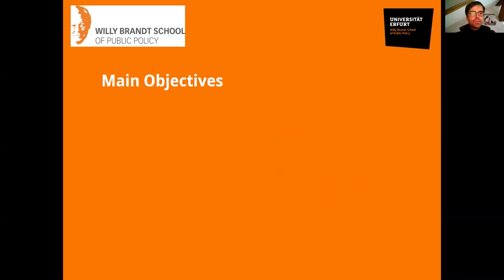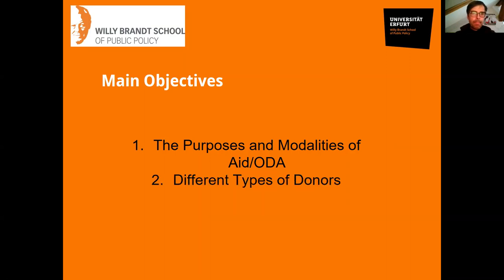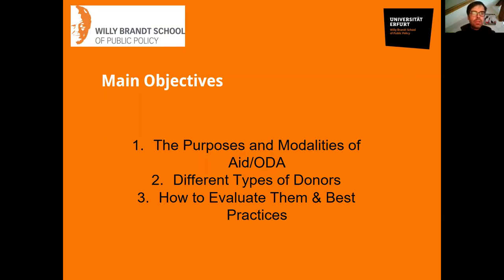The main objectives of this course are threefold. First, I want to give a brief introduction into the purposes and modalities of aid giving in general and official development assistance in particular. Then we focus on different types of donors and different types of aid to understand what works under what circumstances and when. Third, we will do this mainly in the form of asking evaluation questions, but also thinking about evaluation as a tool with certain limits and capabilities.